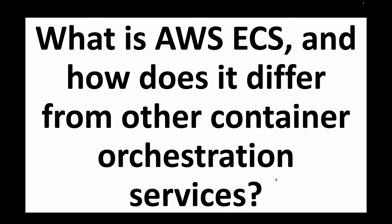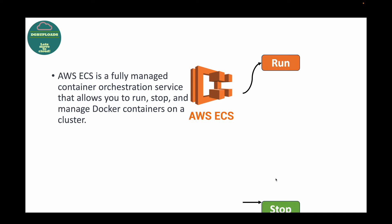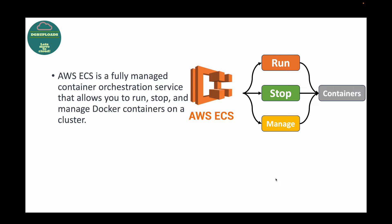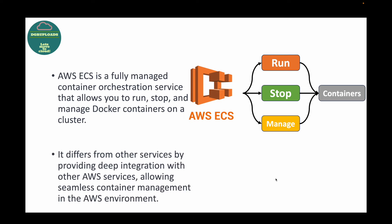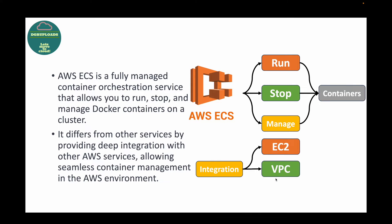The first question is: what is AWS ECS and how does it differ from other container orchestration services? ECS stands for Elastic Container Service and this is a fully managed service provided by AWS. You can just go ahead and set up the cluster and then AWS will do all the hard work for you. Using this service we can run, stop, and manage your Docker containers. ECS provides integration with all other AWS services — EC2, VPC, S3, IAM and more — which allows seamless management of your containers running in the AWS environment.